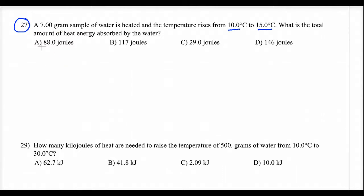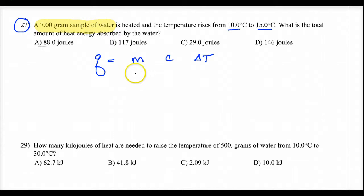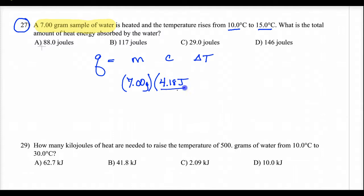I'm going to start with my energy equation: Q equals MC delta-T. Let's see what they gave me. I have a 7-gram water sample — that is the mass, so I have 7.00 grams. Specific heat we know from our reference table for water: 4.18 joules per gram per degree Celsius. I put the units in so I can remember what units I need to make this work.